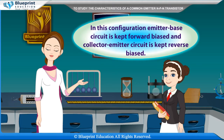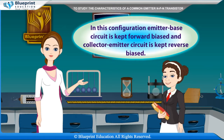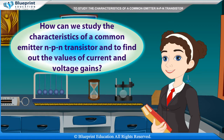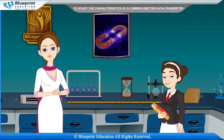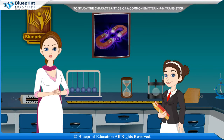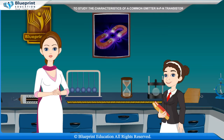The emitter base circuit is kept forward biased and the collector emitter circuit is kept reverse biased. The resistance offered by the emitter base circuit is called input resistance. Its value is very small due to forward biasing.